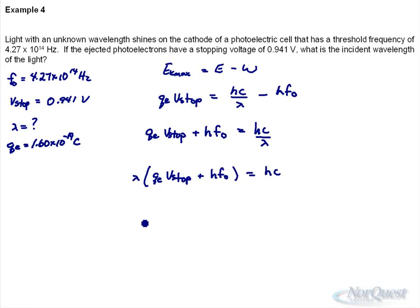And to solve for lambda, we're going to divide by that whole thing. So it's going to be Planck's constant times speed of light divided by this great big term, qₑV_stop plus hf₀.